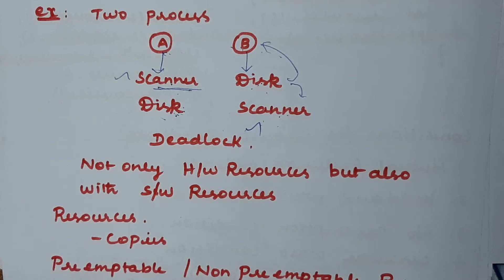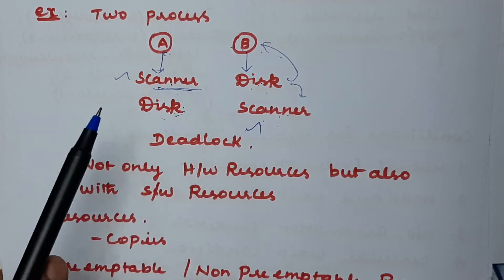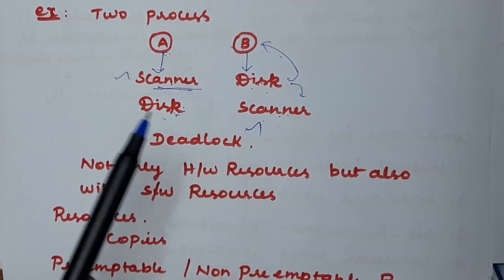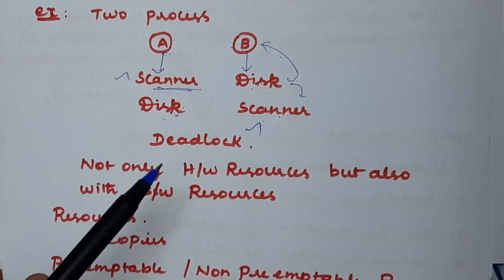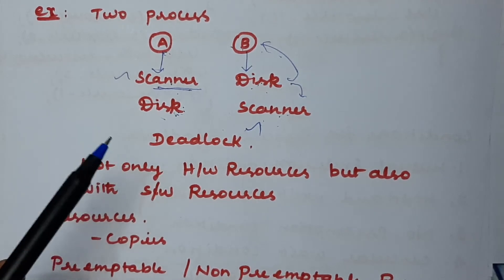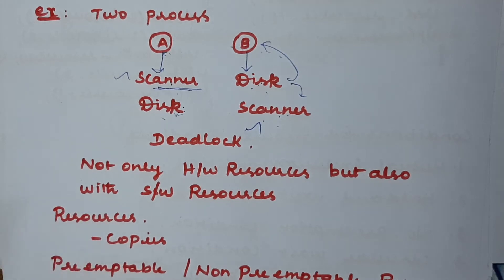In the above example, Process A will never get the scanner and Process B will never get the disk, because both devices have already been given to the other process. The only way out is if a process releases all its resources first and then requests new ones. But it will not release its resources until it gets the second resource — that is deadlock.